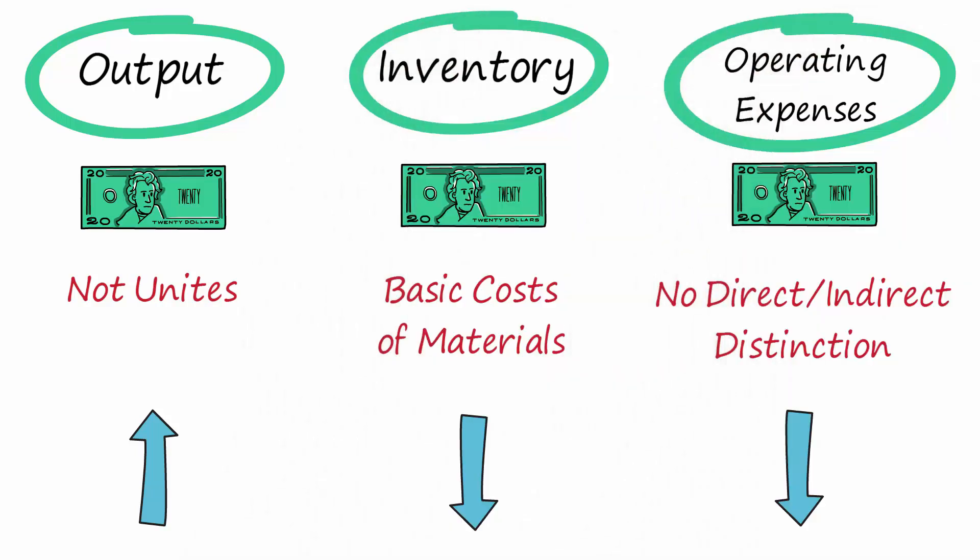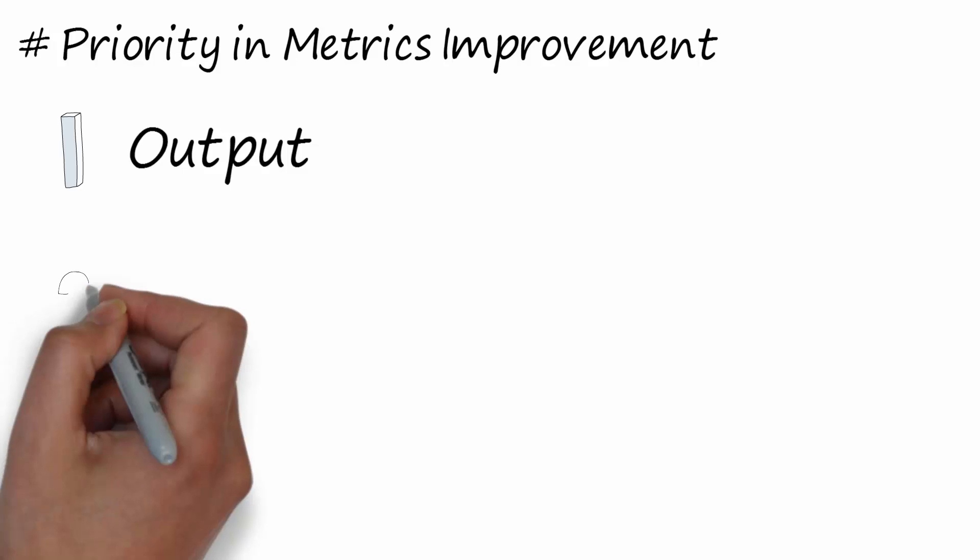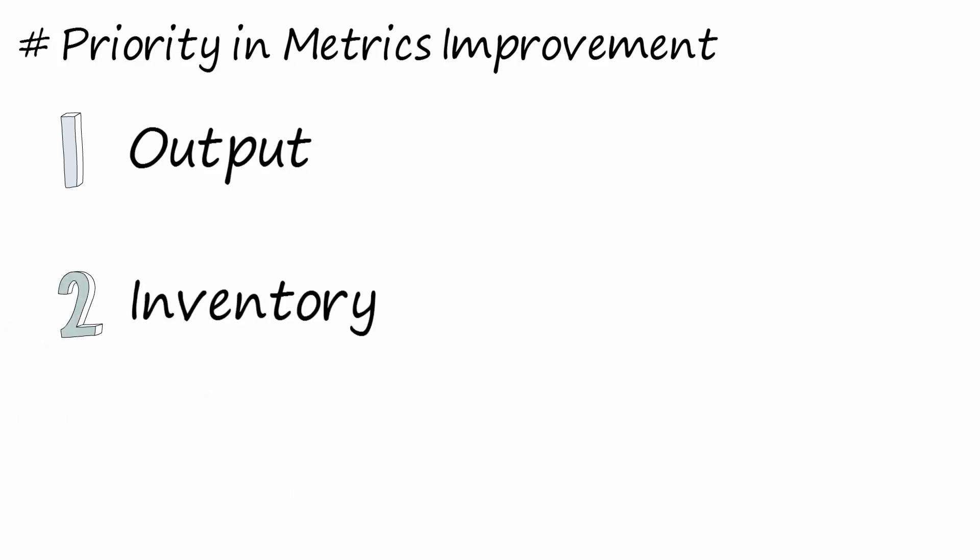In the theory of constraints, priority is also given on which metrics to improve. The first is the output. The second is the inventory. The third is Operating Expenses.